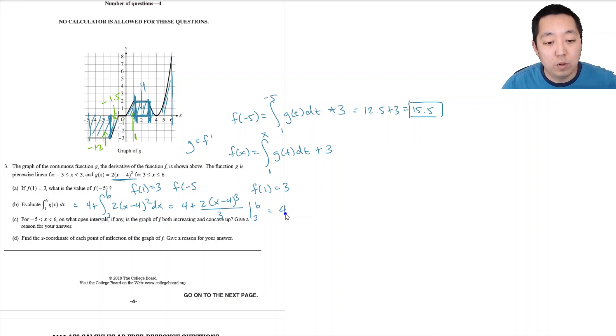So I'm going to do 4 plus I'm going to bring out the 2 thirds and then I'm just going to plug in 6 minus 4, that's 2 cubed, minus 3 minus 4, negative 1 cubed.